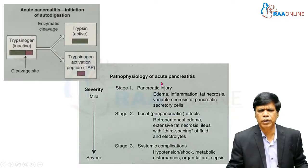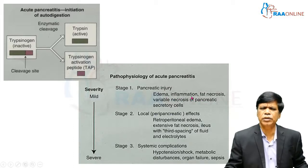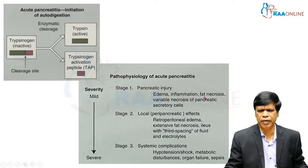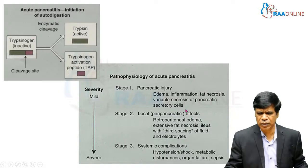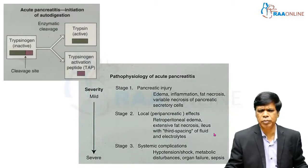Looking at the stages of pancreatitis: initially there is pancreatic injury starting with edema, inflammation, fat necrosis within the pancreas, and then necrosis of the pancreatic secretory cells. Later, local effects in the peripancreatic region lead to retroperitoneal edema, extensive fat necrosis, and ileus — especially of the duodenum and the proximal small bowel.